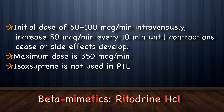Ritodrine hydrochloride is given initially at 50–100 mcg per minute intravenously, increased by 50 mcg per minute every 10 minutes until contractions cease or side effects develop, with a maximum dose of 350 mcg per minute. Please note that isoxsuprine is not used for treatment of pre-term labor in modern obstetrics.